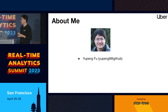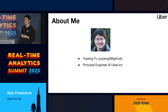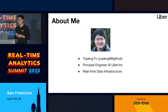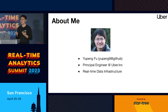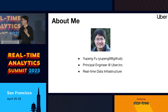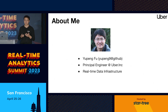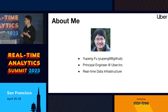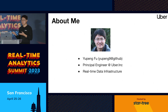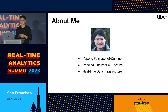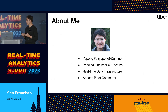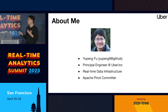About myself: I'm a principal engineer at Uber. I lead the real-time data infrastructure at Uber, which is built on top of many open source technologies like Kafka, Flink, and Pinot. We also use Lucene for our search engine. I'm a Pinot committer, so I've made several contributions including upsert.